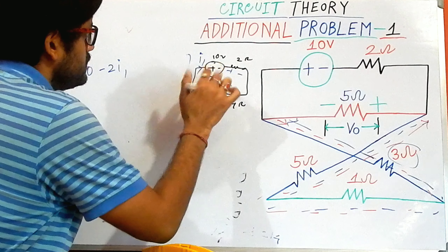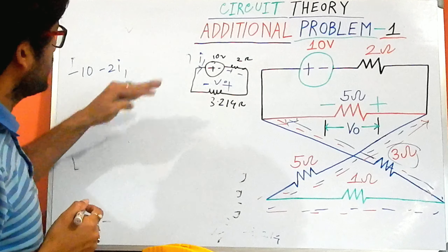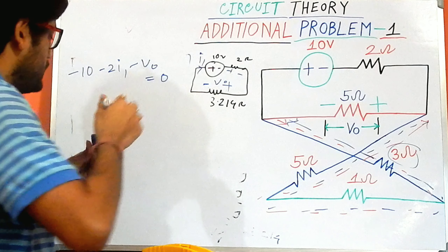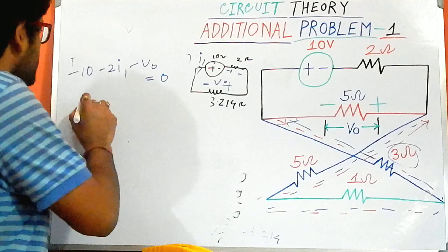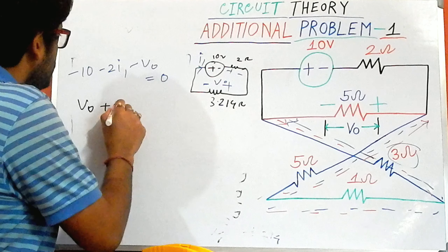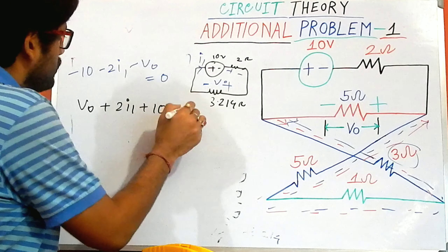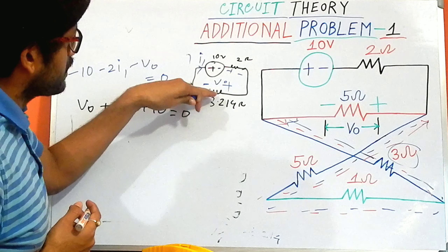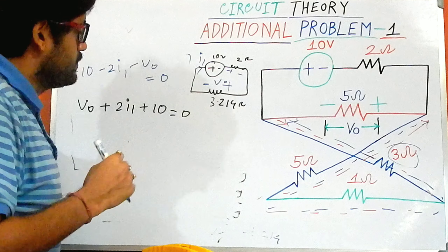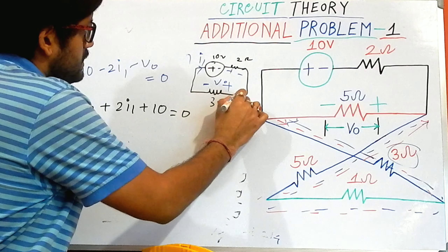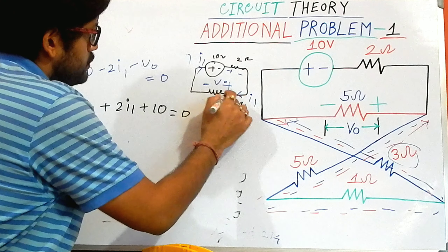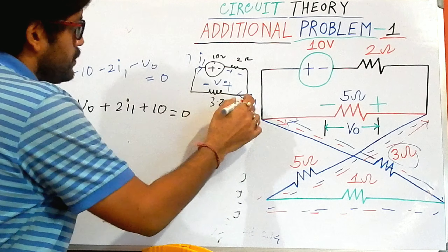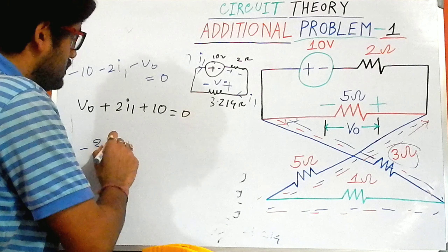The polarity here is opposite — this side is plus and this side is minus. Applying KVL: −10 − 2·i1 − V0 = 0, which rearranges to V0 + 2·i1 + 10 = 0. For the voltage drop across V0, a current i1 flows such that the right-hand side is plus and the other is minus, giving −3.214·i1.